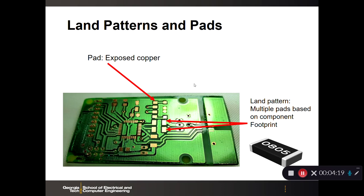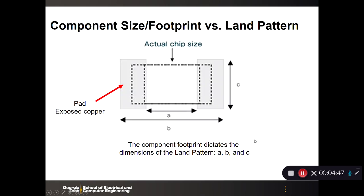Let's talk about land patterns and pads. A pad is an area of exposed copper that a component would be soldered to. A land pattern is multiple pads based upon the footprint of the component. For a chip resistor or chip capacitor, the component footprint is identified by dotted lines, and the pads are the rectangular boxes of exposed copper that the chip device will be soldered to. Dimensions A, B, and C represent the dimensions of the land pattern on the PCB.